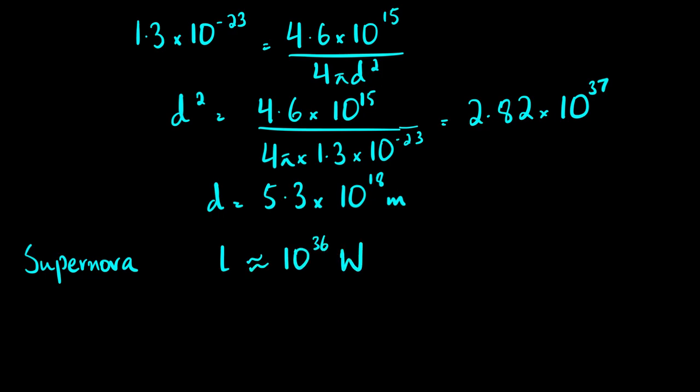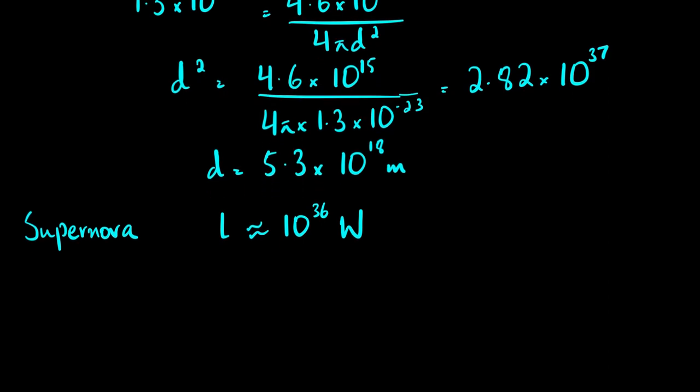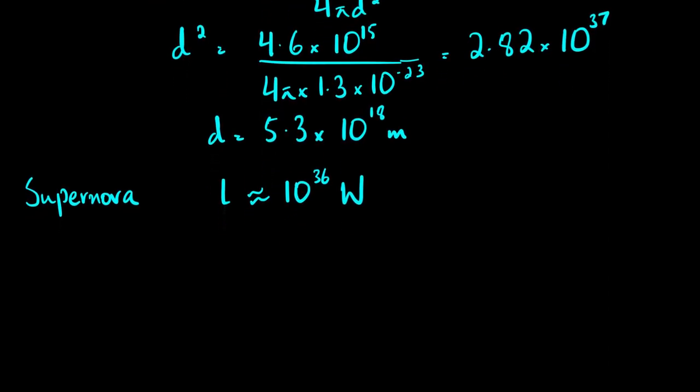Just as an estimate, the luminosity of a supernova is approximately 10³⁶ watts. If you remember the figure for the luminosity of the Sun - that was 10²⁶ - so the luminosity of a supernova is 10¹⁰ times greater than the luminosity of the Sun.